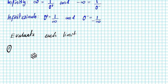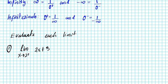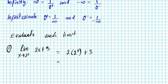The instructions are to evaluate each limit. For number one, we have to find the limit as x approaches 2 from the right of 2x plus 3. We're going to substitute 2 from the right into this expression, so that's going to be 2 times 2 from the right plus 3.